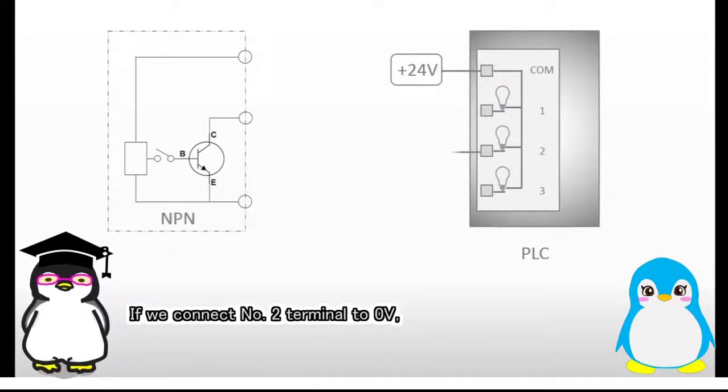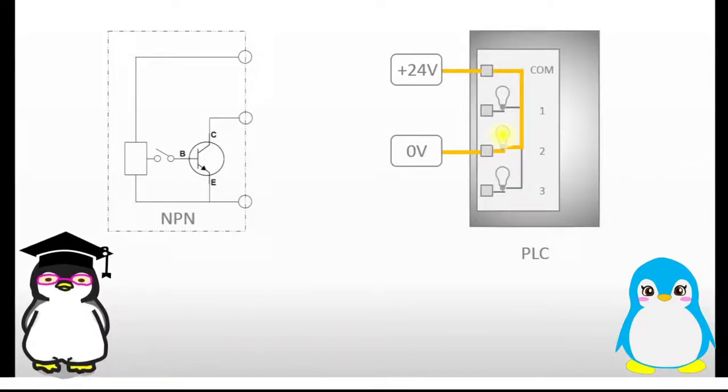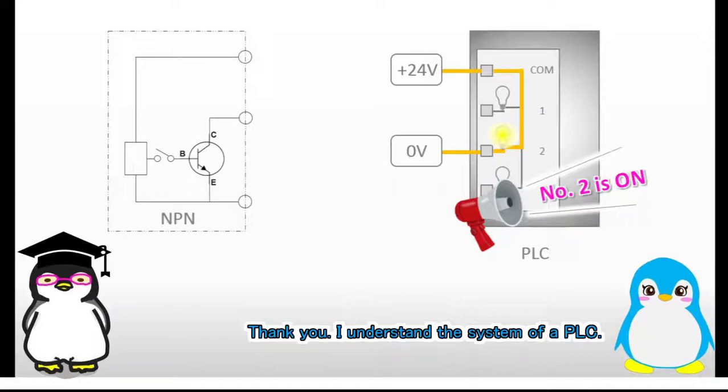If we connect number 2 terminal to 0 volt, electric current can flow and then the lamp turns on, which means the PLC is notifying the machine that number 2 is on. Thank you, I understand the system of a PLC.